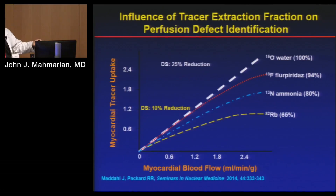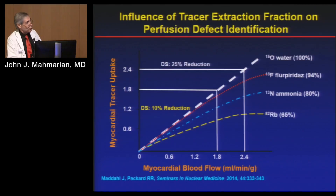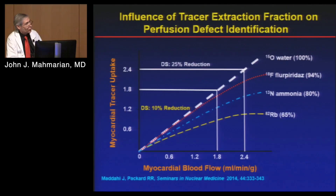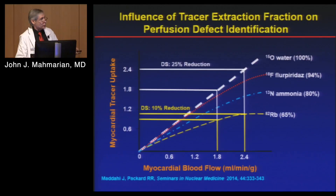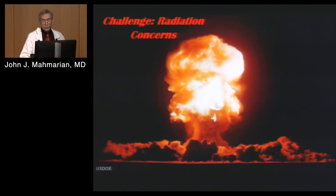As myocardial blood flow goes up, tracer uptake increases as well. With O-15 water, which is linear to flow, you can see the difference in flow from stress to rest — a 25% change in counts from the abnormally perfused area to the normally perfused area. With rubidium, if you can only augment flow to 1.8 in the stenosis area but 2.4 in the normal area, you'll see a disparity in flows resulting in a disparity of tracer uptake, which results in a perfusion abnormality. That's how we do this from a scintigraphic point of view.